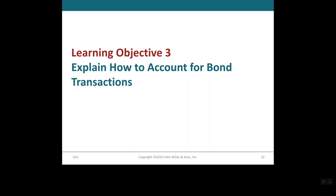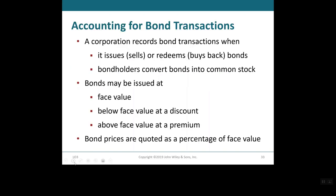Welcome to Learning Objective 3, Chapter 10, explaining how to account for bond transactions. A corporation records bond transactions when it issues or retires bonds — retire meaning buying back — and when the bondholder converts bonds into common stock. If a bondholder sells a bond to another investor, the issuing firm receives no further money on the transaction, nor is the transaction recorded by the issuing corporation.